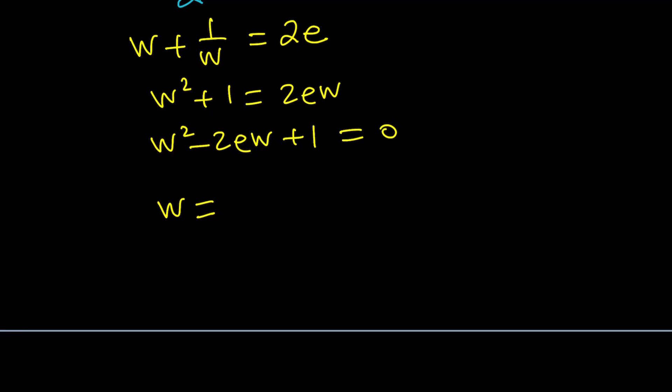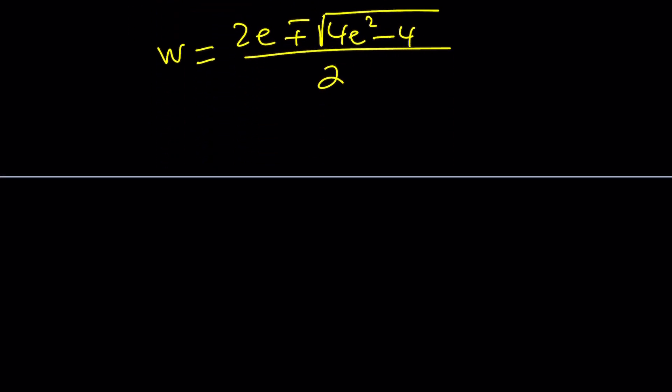Using the quadratic formula, this is going to be negative b plus minus the square root of b squared minus 4ac, minus 4 divided by 2. Notice that w is real. Why? Because 4e squared is greater than 4. We get a real solution, actually two real solutions from here. Let's simplify a little bit. Take out a 4 as 2, divide everything by 2. And you're going to get e plus minus the square root of e squared minus 1. Isn't that cool?